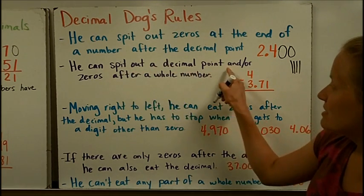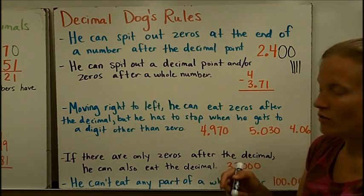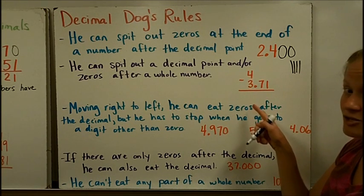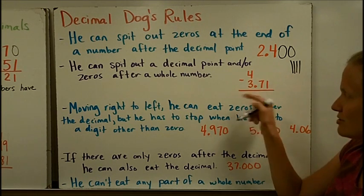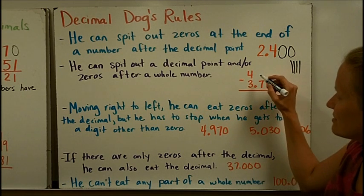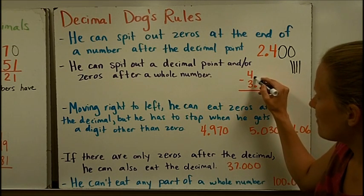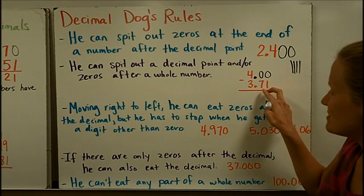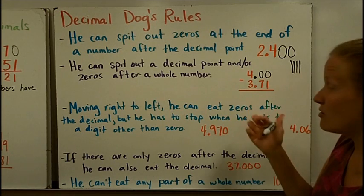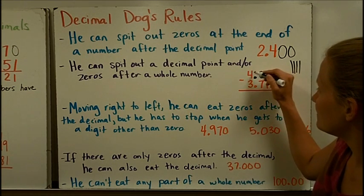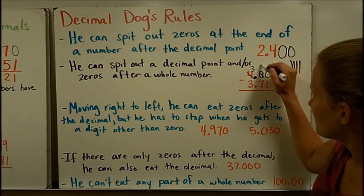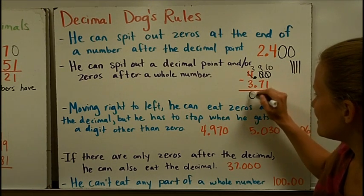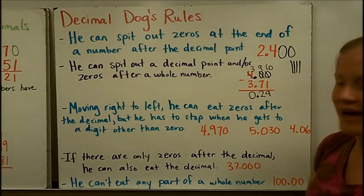Decimal dog can spit out a decimal point and/or zeros after a whole number. In this problem, let's say you had four dollars and you spent three dollars and seventy-one cents. To do this subtraction problem, you would ask decimal dog to spit out a decimal and then zeros so that you had the same number of digits behind the decimal point. Then you could subtract like normal. That would be twenty-nine cents left.